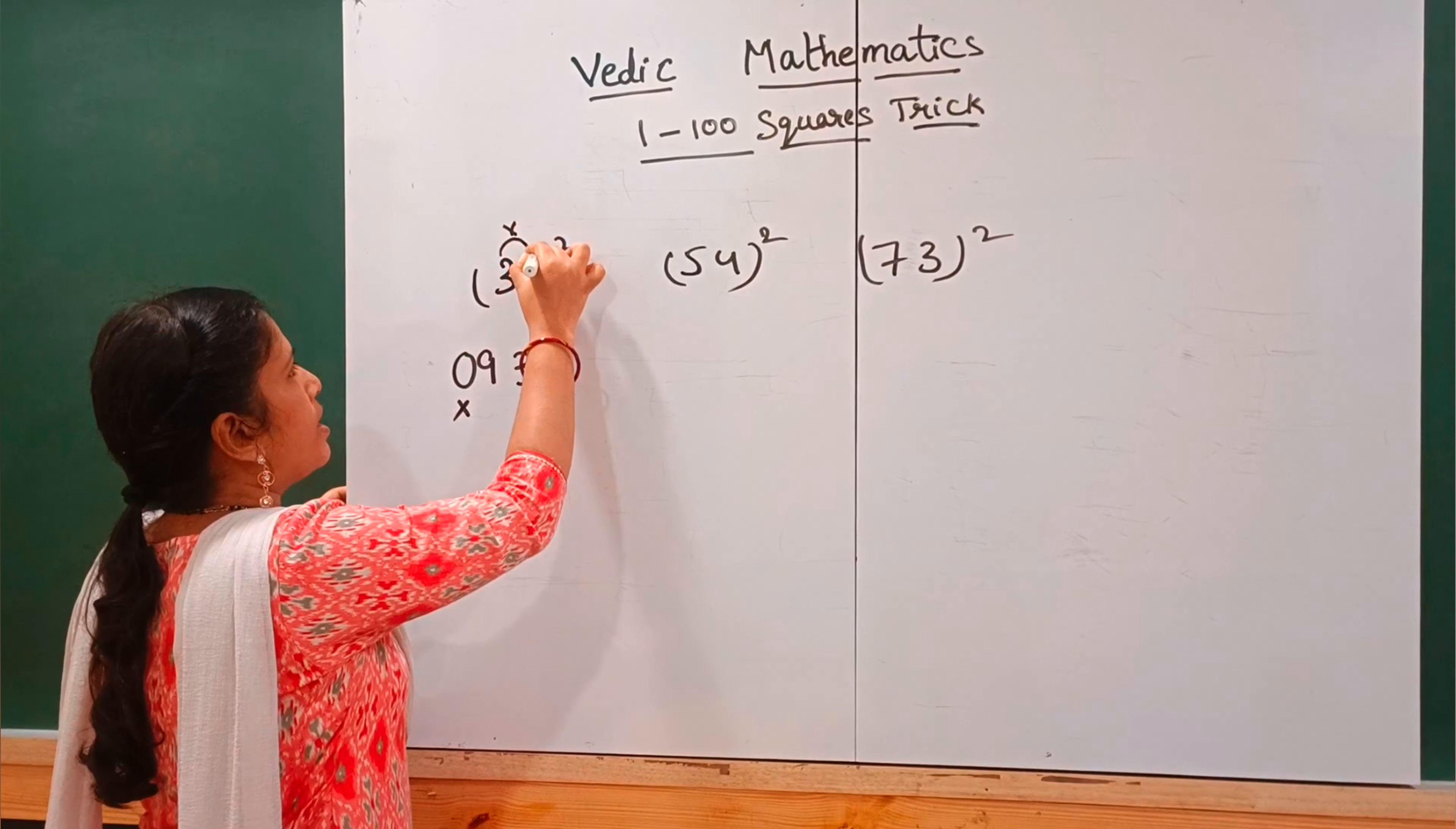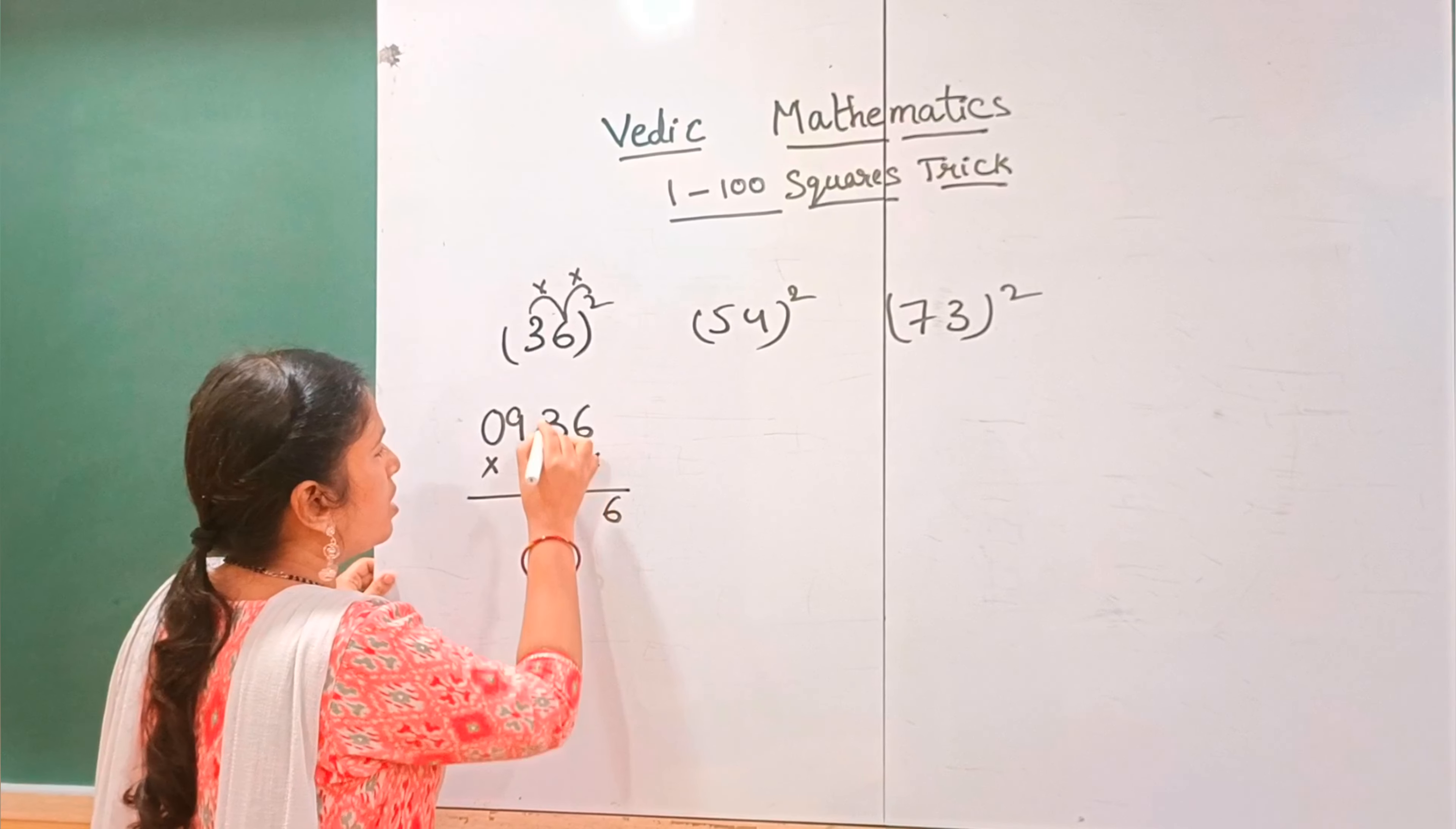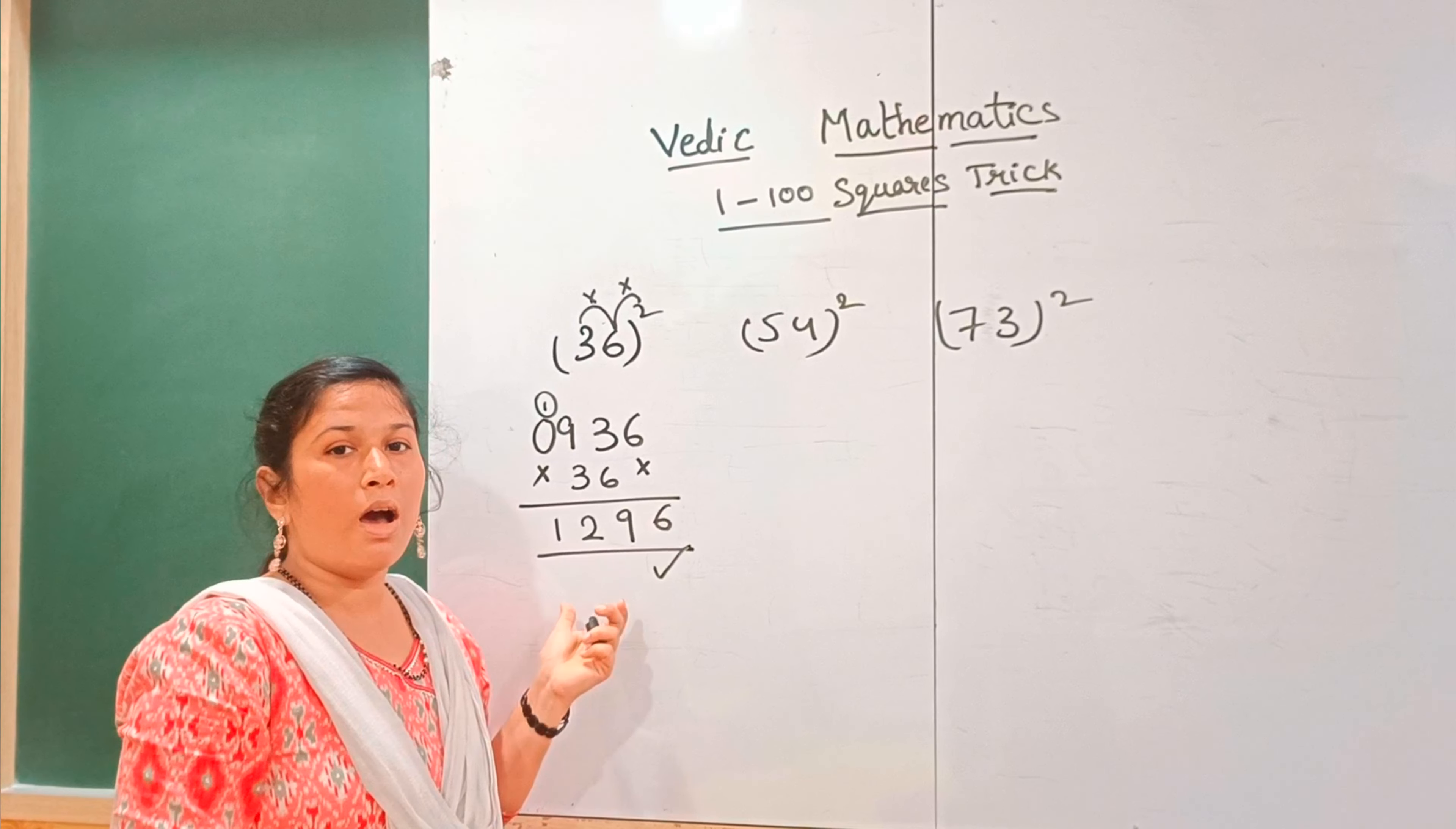The first number squared, the second number squared. Then we make this calculation using the formula. So 1296 is the answer.